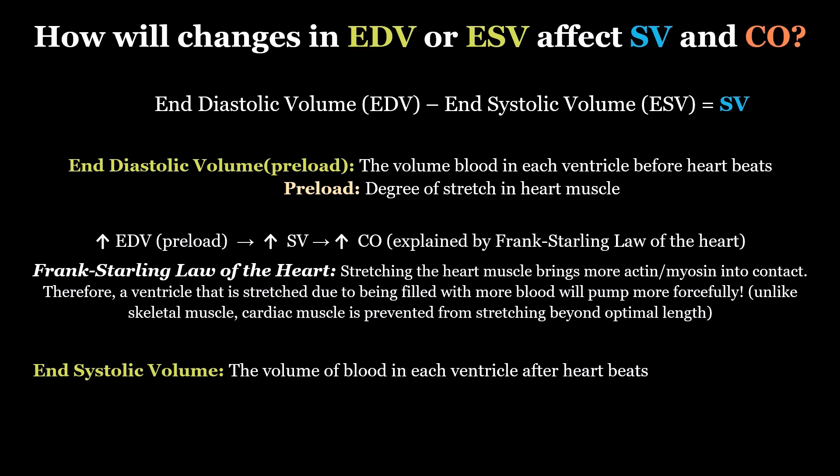If a ventricle has more blood, it will contract harder. You might remember with skeletal muscle that there is a degree to which you can stretch your muscle that is beyond the optimal length for the force of a contraction. But cardiac muscle is prevented from overstretching by the fibrous pericardium, which prevents it from becoming too large.